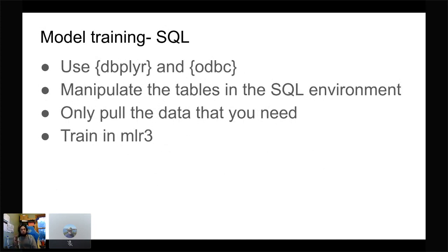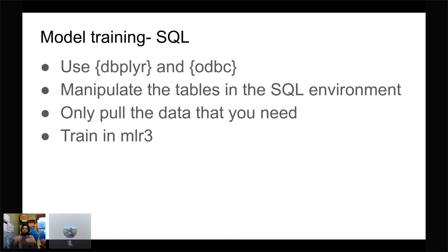The model training is done straight off the data warehouse using dbplyr, which is very useful because it allows you to use the power of the SQL server. Instead of bringing everything into R and having memory problems, all the filtering, sorting, and arranging is done on the SQL server and then you bring in only what you need — that's very liberating. The machine learning itself is done in MLR3, which is another great package. MLR3 is built in a modular way and emphasizes the use of pipelines, so you can swap out an imputation step or algorithm and the rest of the chain still works.